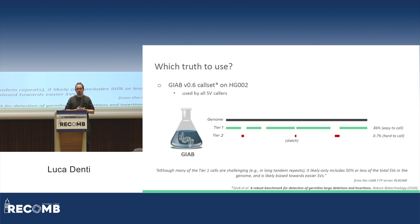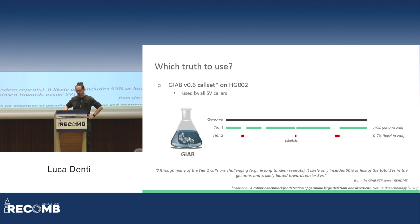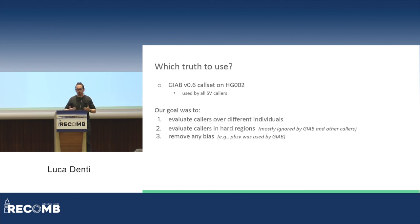We discovered a potential problem with this call set that can be summarized with one word: incompleteness. The GIAB divided the genome into tier 1 and tier 2. Tier 1 accounts for 86% of the genome regions, while tier 2 accounts for only 0.7%. In the readme of the repository, they say that although many tier 1 calls are challenging, it likely only includes 50% or less of the total structural variation in the genome and is likely biased towards easier structural variations. This means all callers have been evaluated on easy-to-call structural variations in easy-to-call regions of the genome. We wanted to evaluate callers on multiple individuals and on hard-to-call regions, removing any bias.